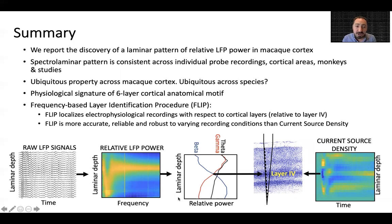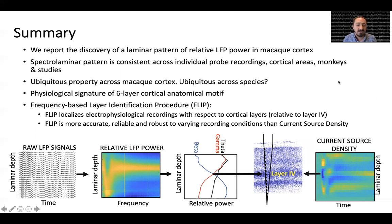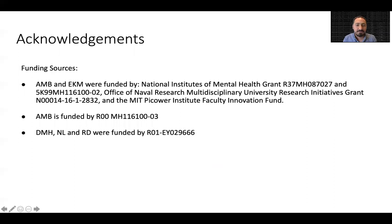The FLIP procedure identifies the recording contact of layer four and locates all other contacts relative to it. Because the spectral laminar patterns are more consistent and generalized than CSD, our layer identification procedure is more accurate, reliable, and robust than the CSD method. We thank our funding sources and thank you for your attention.